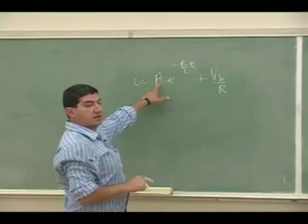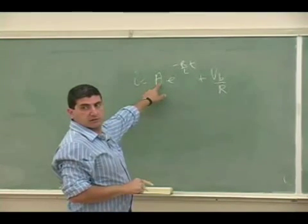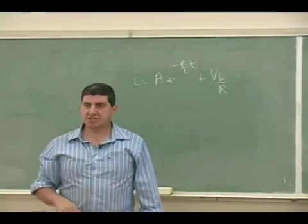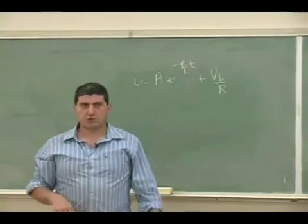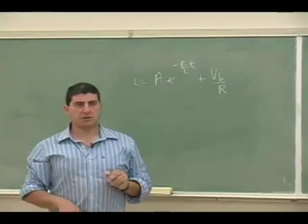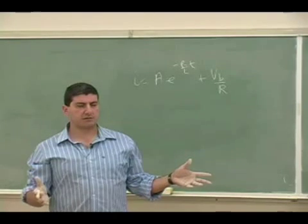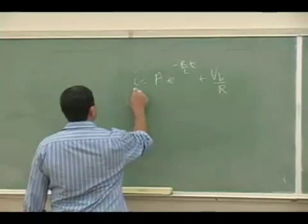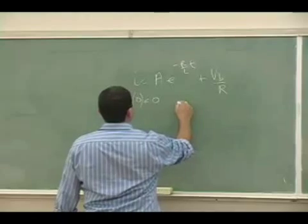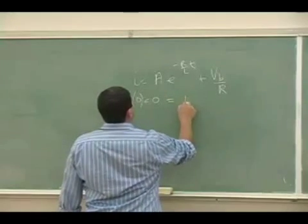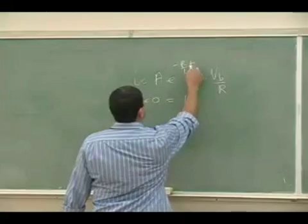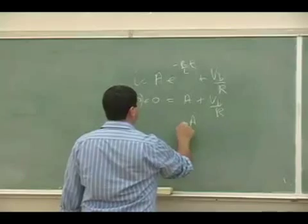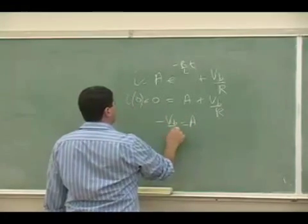And then what's the restriction on A? That depends on the initial conditions. What's the initial current? Well, when we close the circuit, initial current is going to be 0, right? We said, because the inductor is going to oppose you. So the initial current needs to be 0. So put 0 here. That's going to be A. E to the 0 is 1. So the restriction on A is negative VB over R.